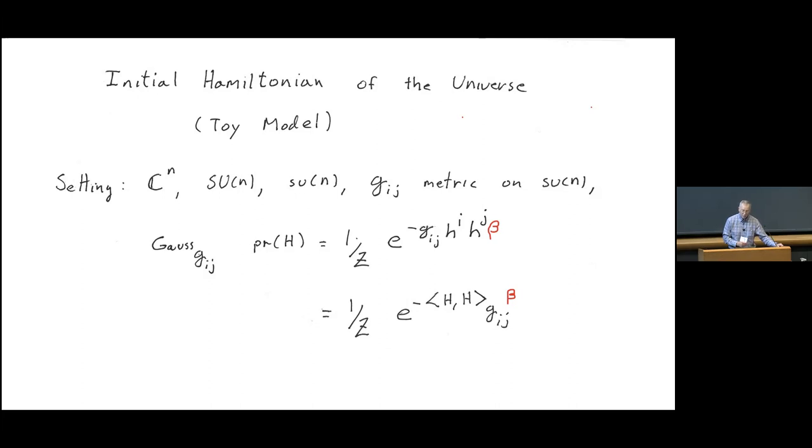And I've written out in two different notations how the inner product depends on the metric. If you let the little h's be the coefficients of the Hermitian matrix in a fixed basis, then that's the index notation for the length squared of a Hermitian matrix for a given metric, g_ij. And then a mathematician might write it the other way, the lower formula. And when I prepared the slide at first, I left out the inverse temperature. And then by the miracles of PowerPoint, I was able to add it last night in red.